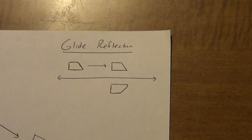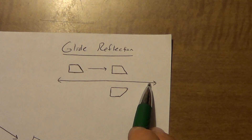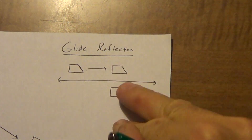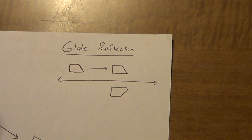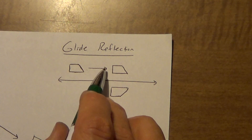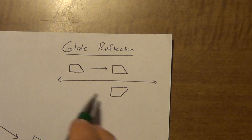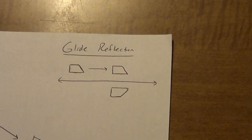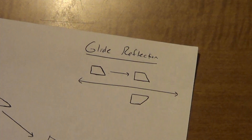The glide reflection looks like this: I take this shape, move it over, and then reflect it over this line — flipping it down. The movement vector is parallel to the line of reflection, which makes this a glide reflection. It's a composition, but a specific type. Those are the things you need to know for lesson 4.3. Make sure you watch lesson 4.9 next.